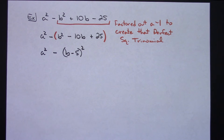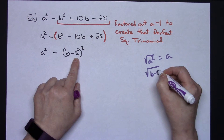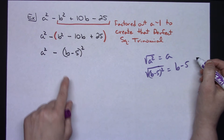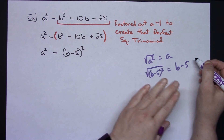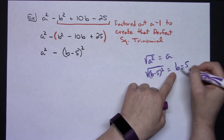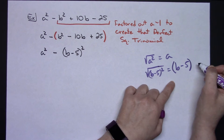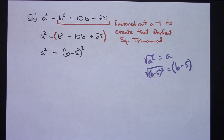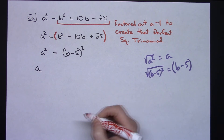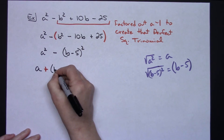I'm going to take the square root of each term. The square root of a squared gives me a. The square root of the b minus 5 quantity squared gives me b minus 5. Now on this one, because the binomial that is squared comes to the right of the minus sign, when I write the factored form — this plus this one, and then this minus this one — I have to remember that the second factor involves subtracting a binomial, so I'll keep it in parentheses.